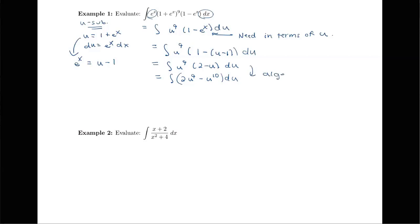The integral of a product of two functions is not the product of the integrals, just as the derivative of a product was not the product of the derivatives. So we must expand and then integrate each term, since the integral of a sum or difference is the sum or difference of the integrals of each piece. The integral of 2u to the 9th gives 2u to the 10th over 10, and minus u to the 10th gives minus u to the 11th over 11, plus C.